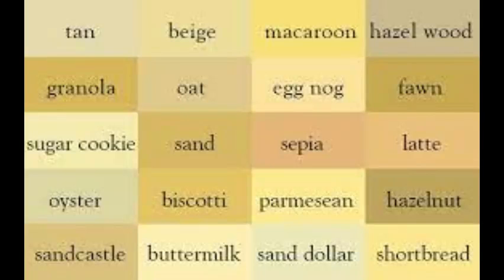Now let's continue with tan. Its unique shades are: tan, base macaroon, hazelwood, granola, oat, eggnog, fawn, sugar cookie, sand, sepia, latte, oyster, biscotti, pharmazeum, hazelnut, sang castle, buttermilk, sand dollar, and shortbread.